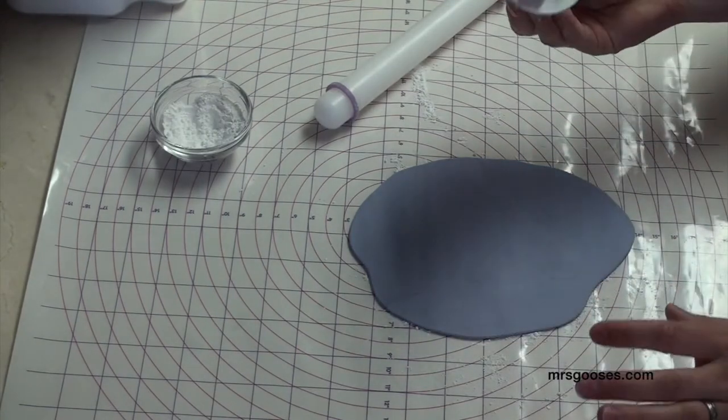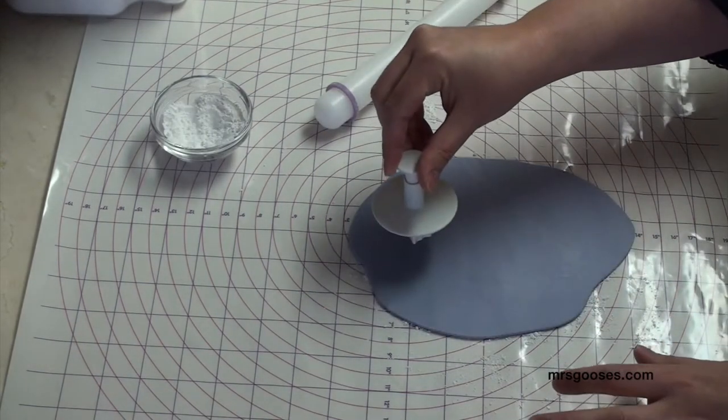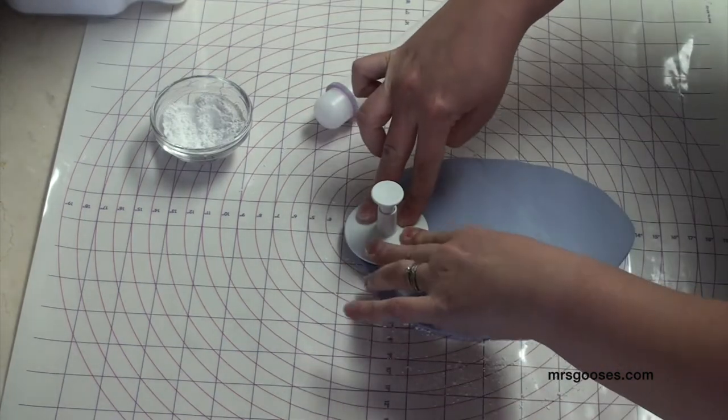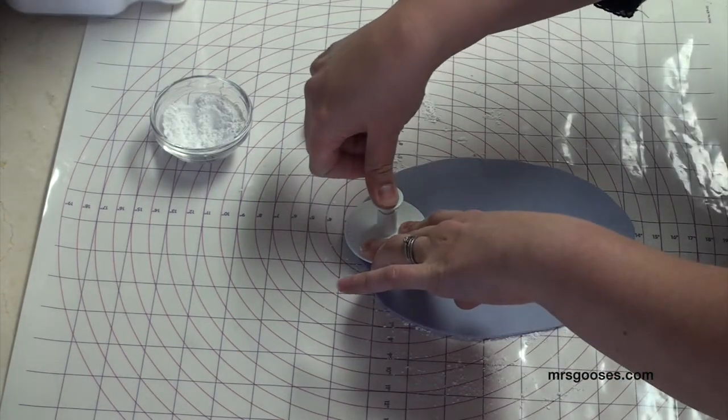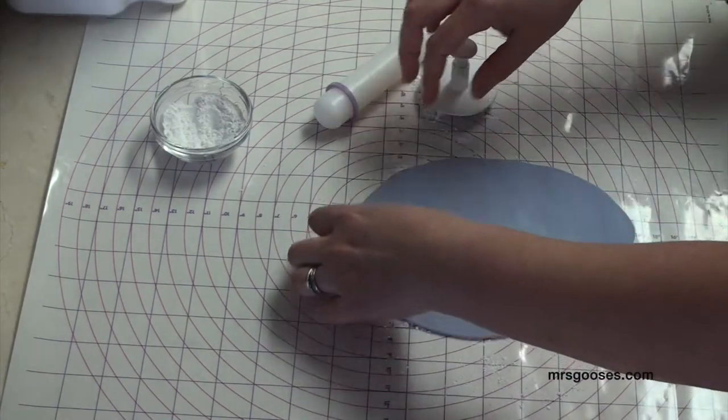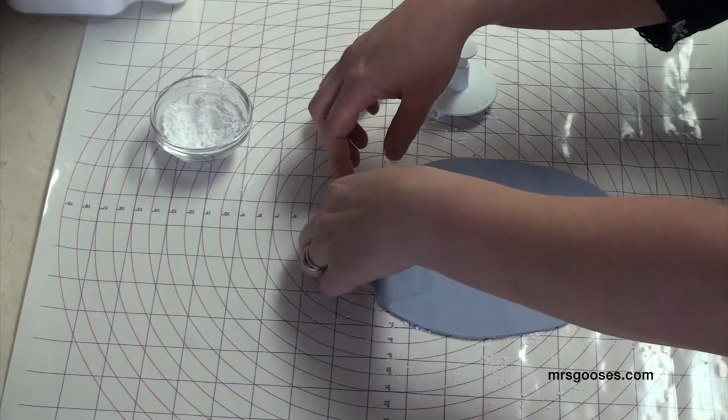And so once we've done that it is simply taking your plunger cutter, popping it on the surface, press around the edge first to cut it and then you just press a little bit on the top and that will make your pattern onto your icing. And then you just take your butterfly out.